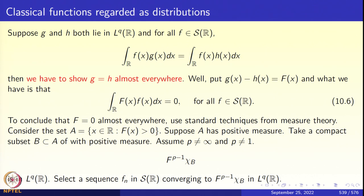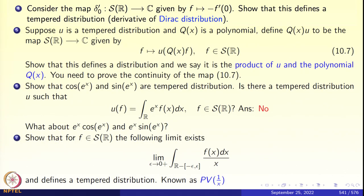So we have shown: if ∫ F(x)f(x) dx = 0 for all f in S(R), then F = 0 almost everywhere. That gives us another example of a tempered distribution. Now consider the derivative of the Dirac delta, δ₀'. Define it by f ↦ −f'(0). This is also continuous: if fₙ → f in the Schwartz class, the derivatives converge uniformly, so fₙ'(0) → f'(0). Thus δ₀' is a tempered distribution — the derivative of the Dirac distribution.